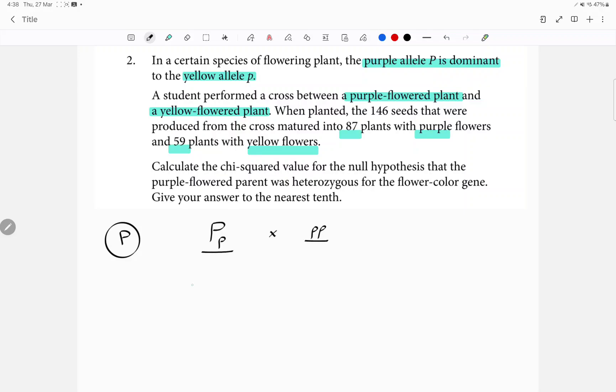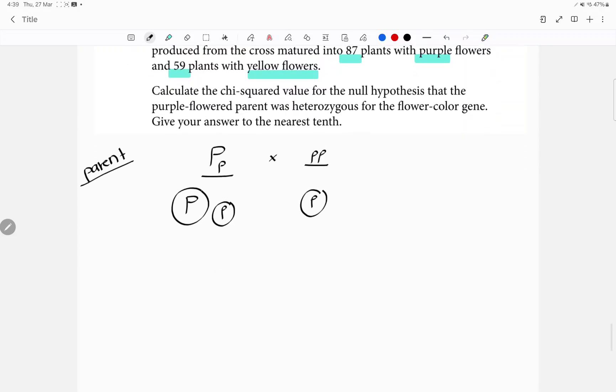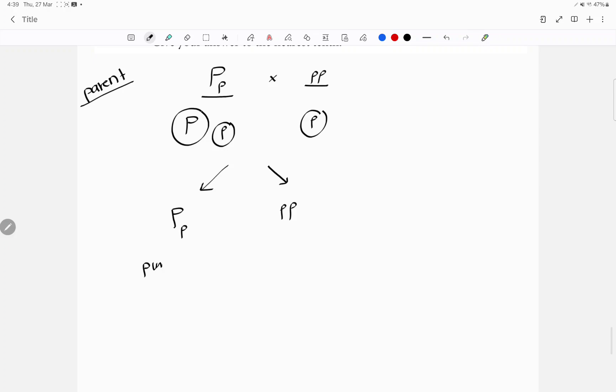Let's now make them into gametes. Capital P is the parent generation. Capital P small p crossed with small p small p. If they mate, you will get capital P small p, small p small p. That means you should get half to be purple and half to be yellow.